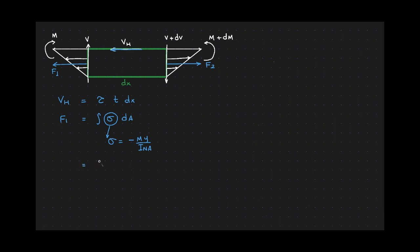Therefore, we have integral negative m y over i of the neutral axis dA. Let us put the constants outside of the integral sign, therefore we have f1 is equal to negative m over i of the neutral axis times integral y dA.